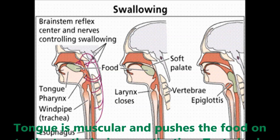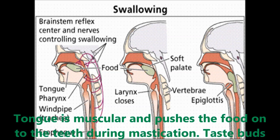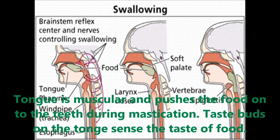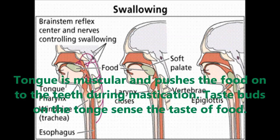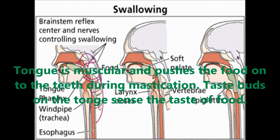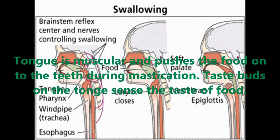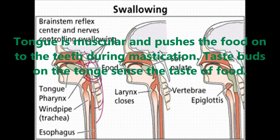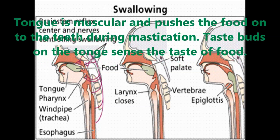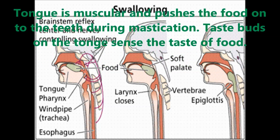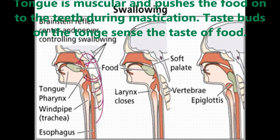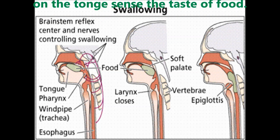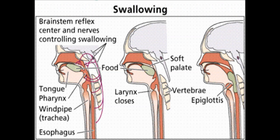The tongue is a muscular organ and pushes the food onto the teeth during mastication. It also helps to push the masticated food into the pharynx. The taste buds on the tongue sense the taste of the food.